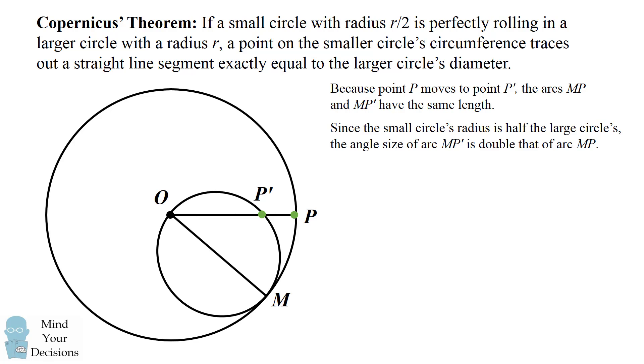Next, since the small circle's radius is half of the large circle's radius, the angle size of arc MP' is double that of arc MP.